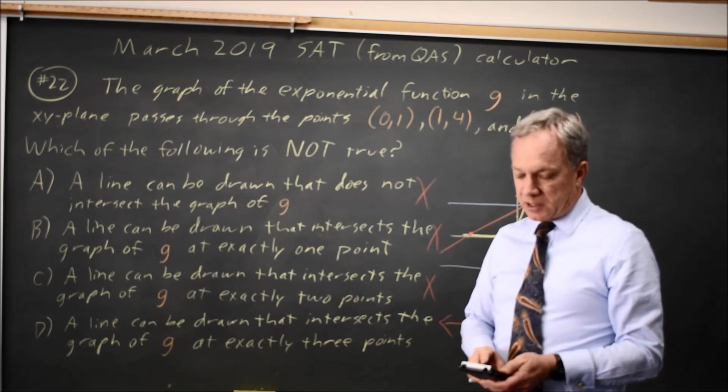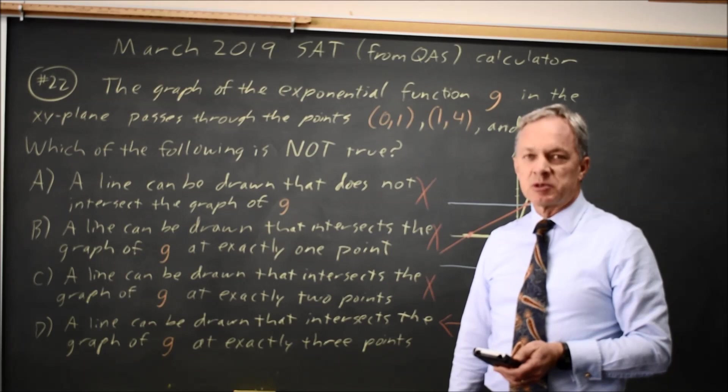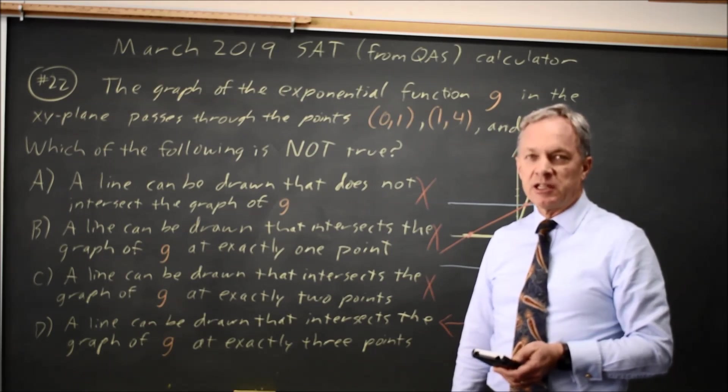And looking at the shape of the graph, it's clear that I can intersect 0, 1, or 2 times, but I don't see any opportunity to intersect three times.